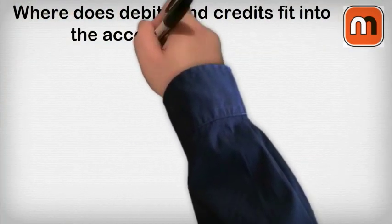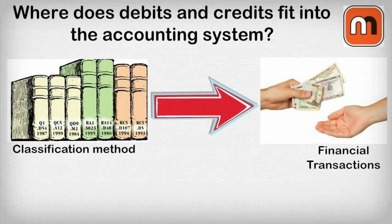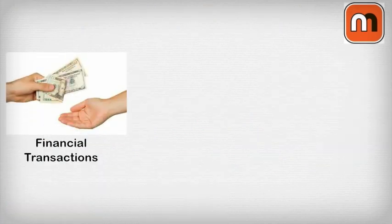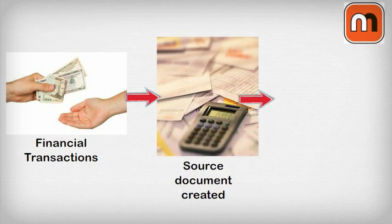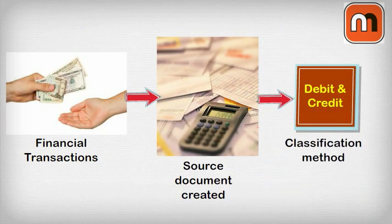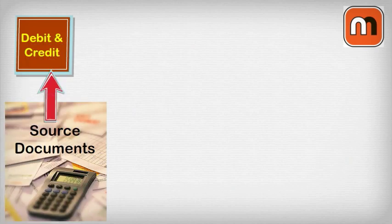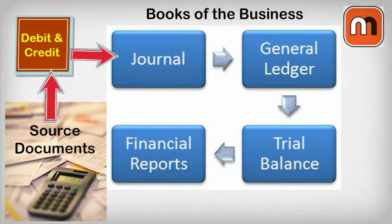Where does debits and credits fit into the accounting system? Debits and credits is a classification method used to record financial transactions in the double entry bookkeeping system. This classification method is applied when financial transactions take place and a source document is created. The debits and credits classification method allows the financial information contained in the source document to be recorded in the books of the business, starting with what is known in accounting as the journal.